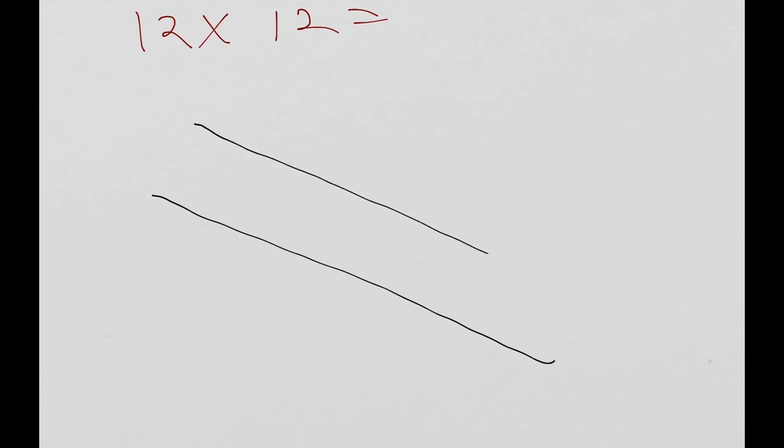And then 2 lines. Remember, make a space. And then 2 lines. And then we're going to do 1 line going back this way. And then 2 lines going this way.